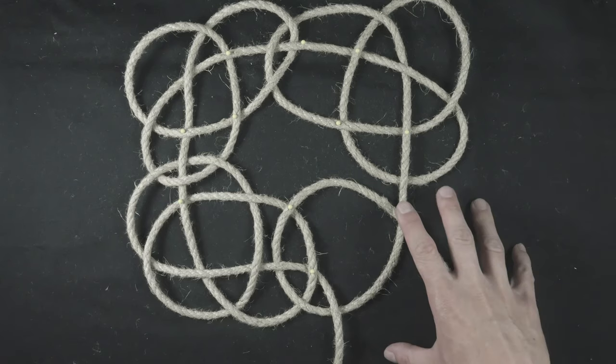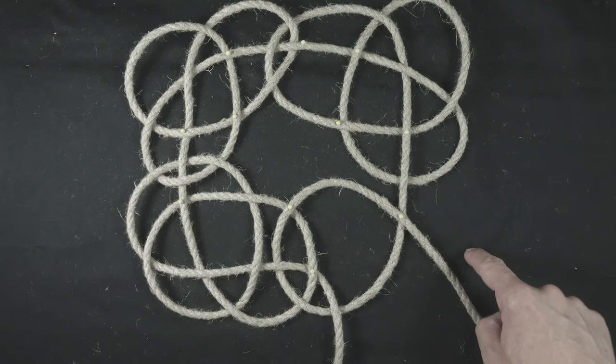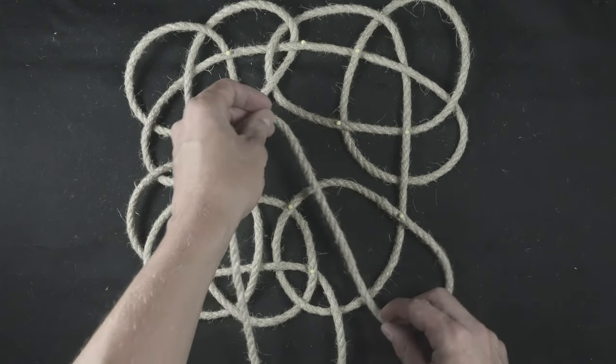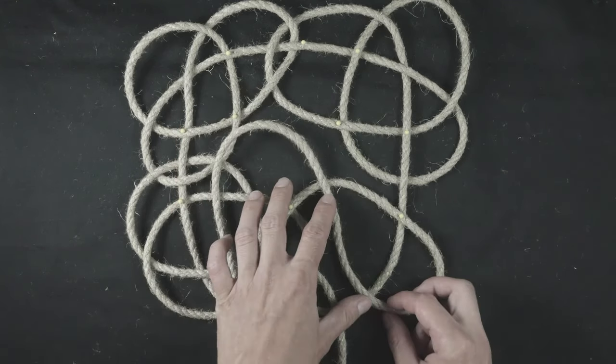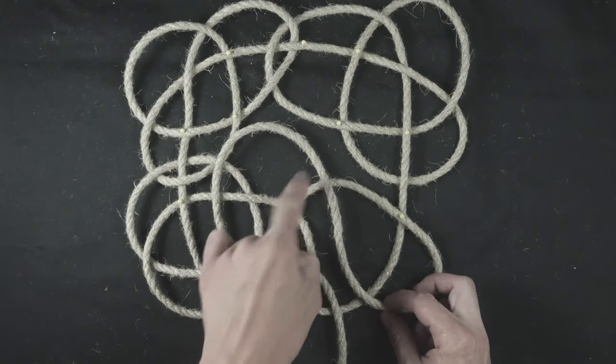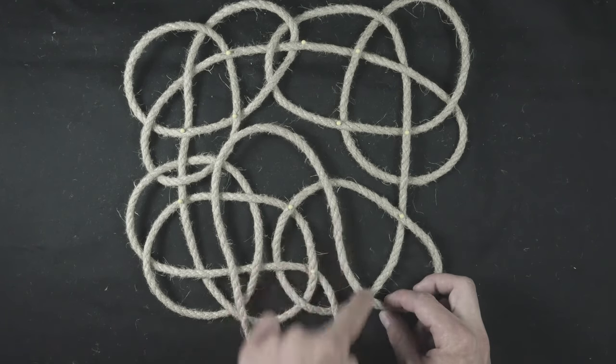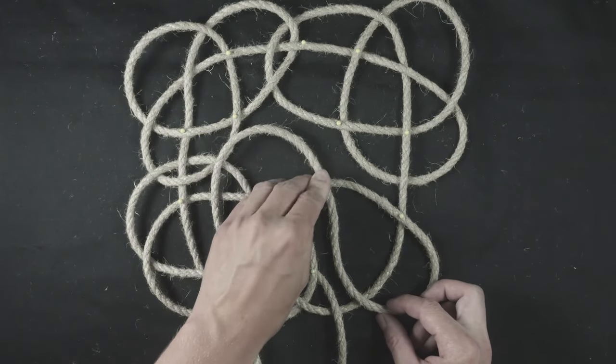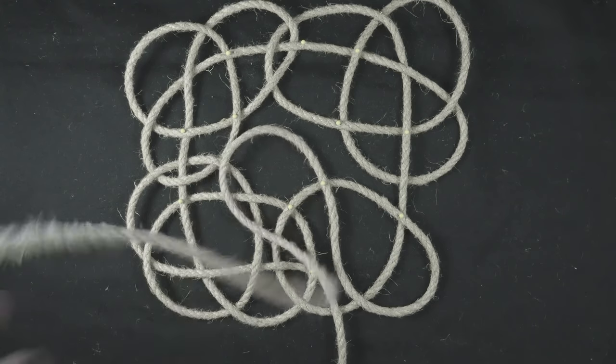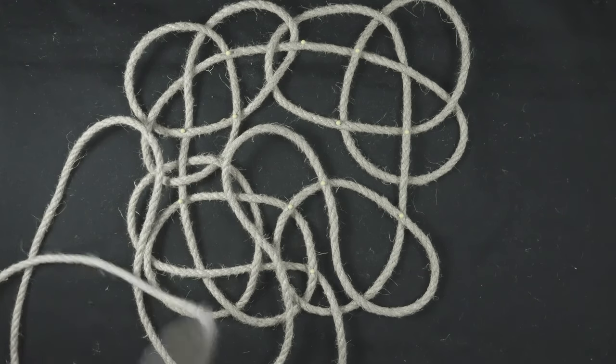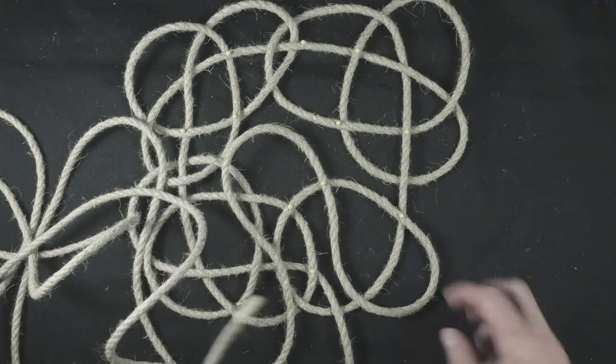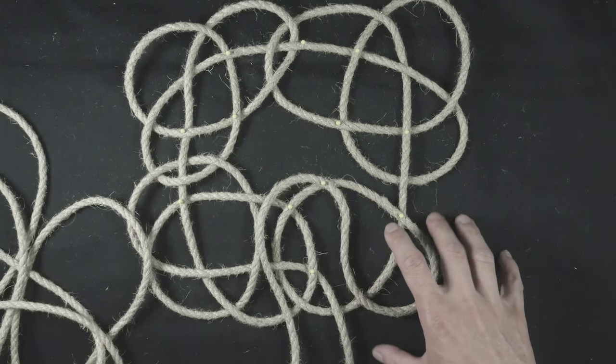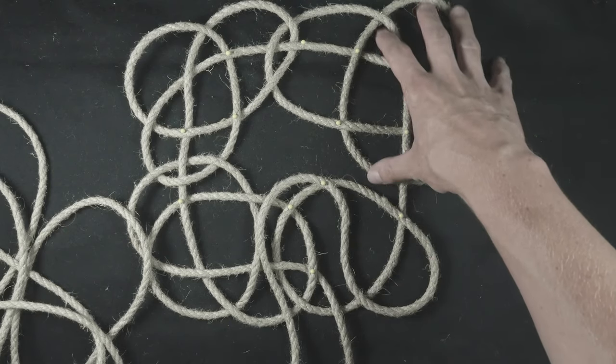Now our final bottom right corner. With the right end we pass over our right loop, so over two.